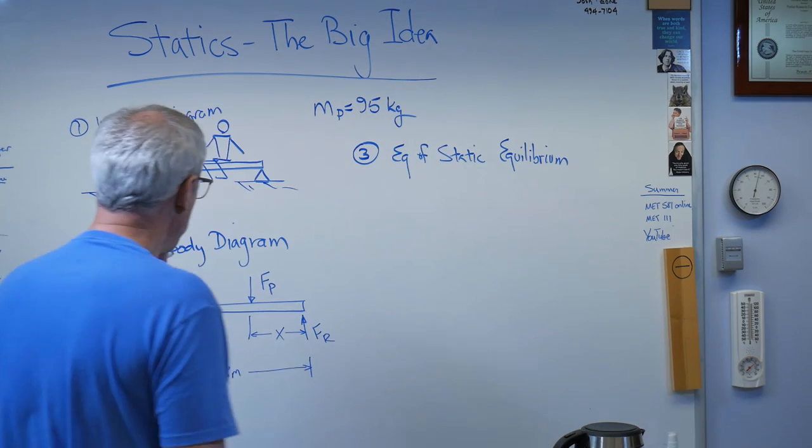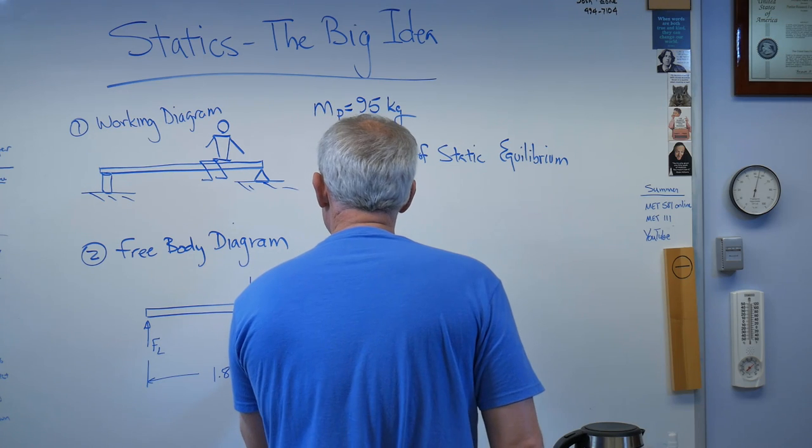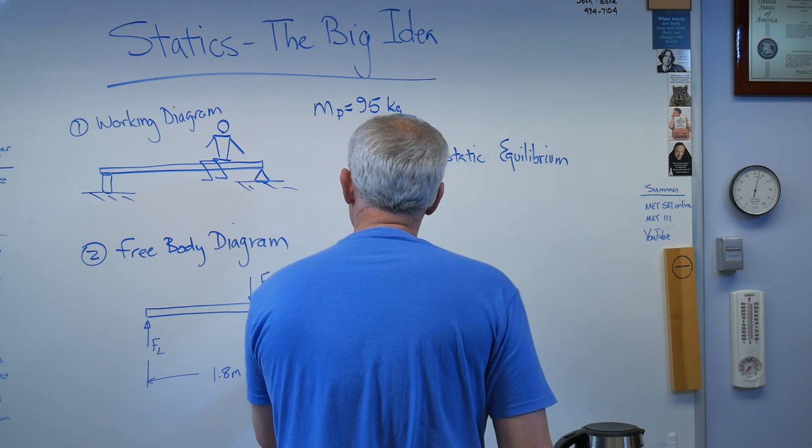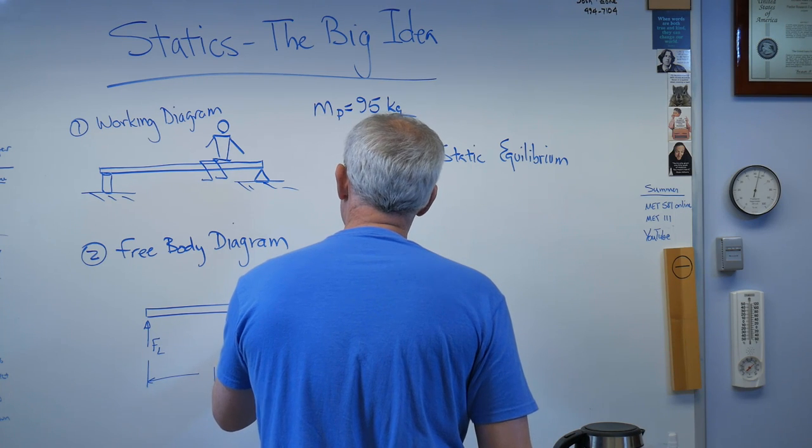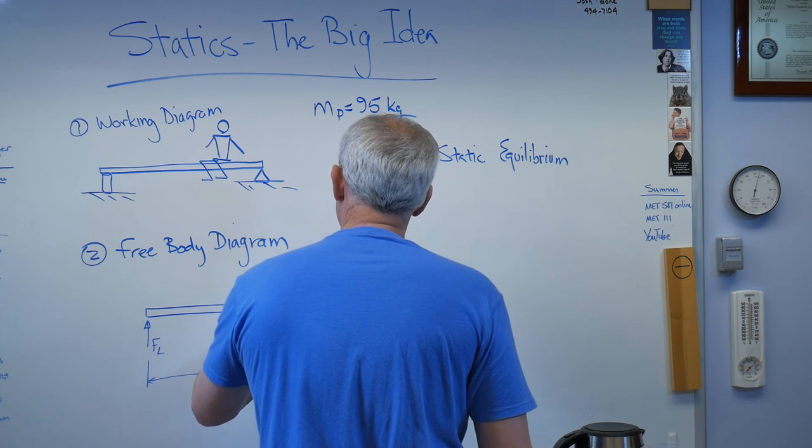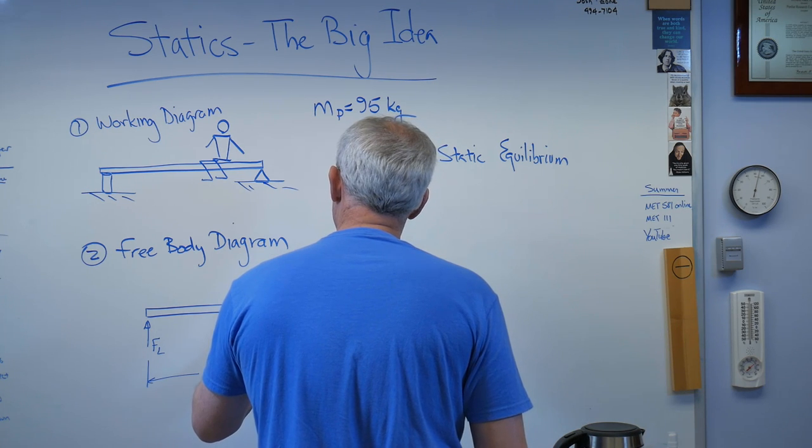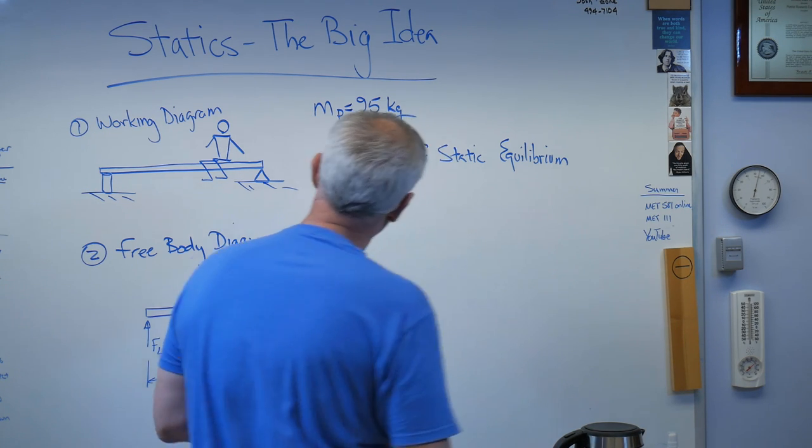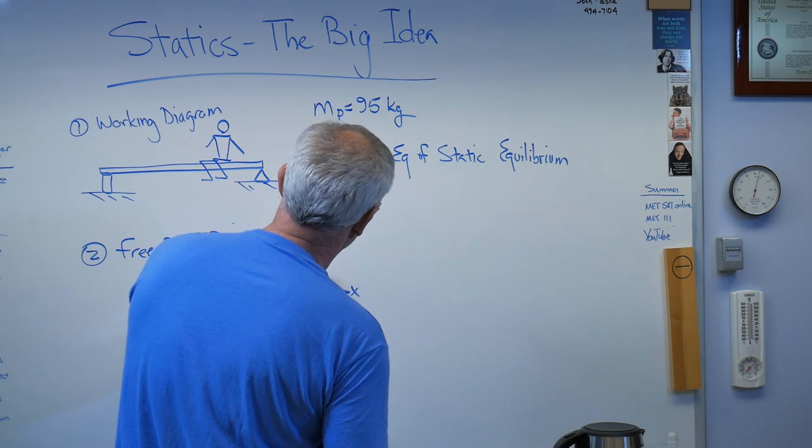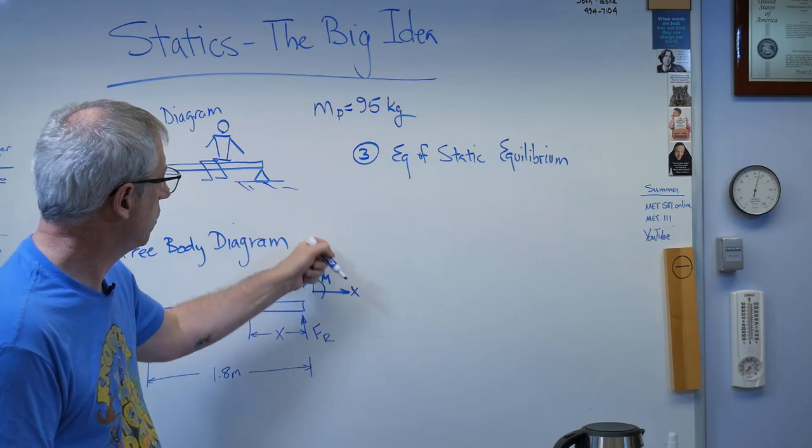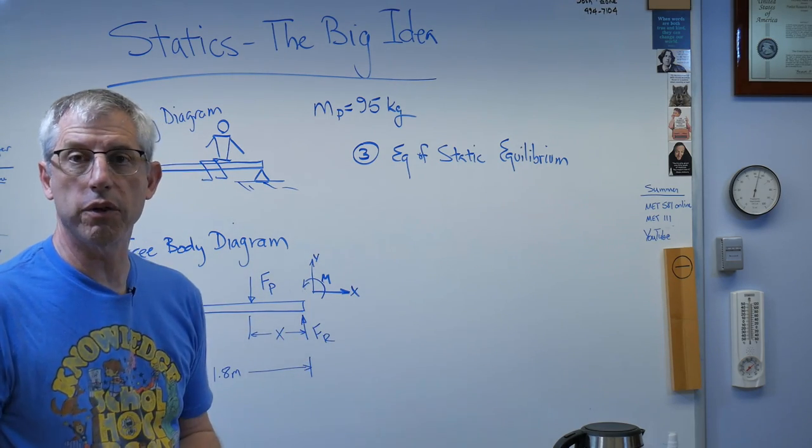Step three: equations of static equilibrium. We're going to need a coordinate system here. There's x, y, and the moment goes counterclockwise, it goes from x to y, it follows the right hand rule. That's the coordinate system we're going to use here.